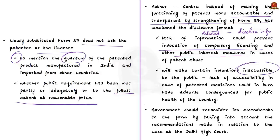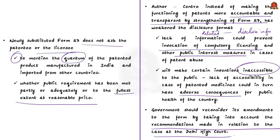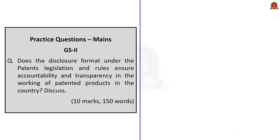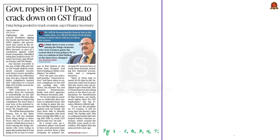Such lack of accessibility in the case of patented medicines could have adverse consequences for the public health of the country. Therefore, the author asks the government to reconsider its amendments to Form 27 by taking into account the recommendations made in relation to the Delhi High Court case. With this, we come to the end of the analysis of this news article. Now let us move on to the next news article.